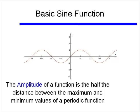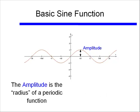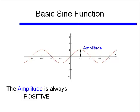We also need to talk about the amplitude of a function. An amplitude is half the distance between the max and the min values of a periodic function, or half of the range of a function. The amplitude of this function, of the basic sine function, is 1. We can also think of the amplitude as the radius of a periodic function. Just as the radius of the circle was half the diameter of a circle, the amplitude is half the range of a periodic function. And remember, amplitude is always positive, just like we couldn't have had a circle with negative radius.